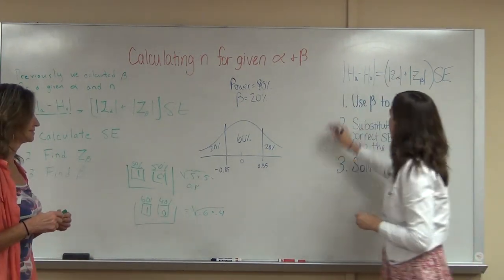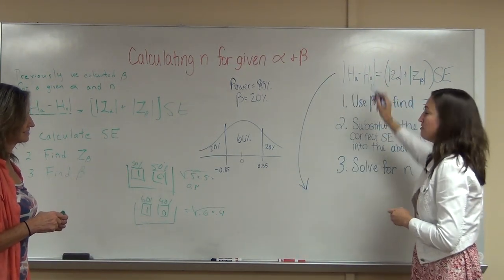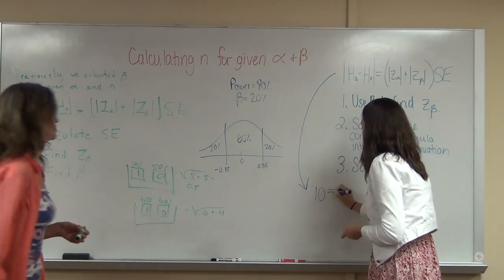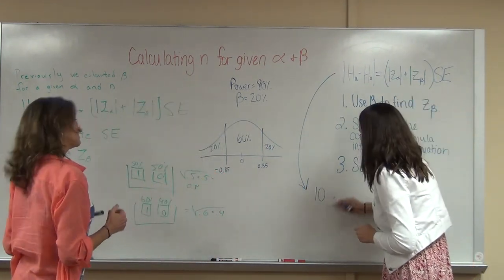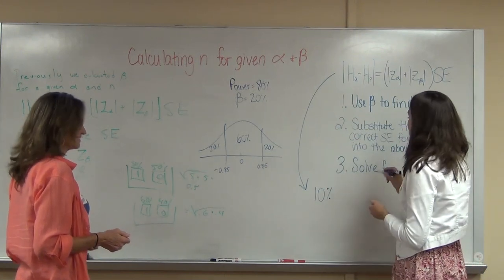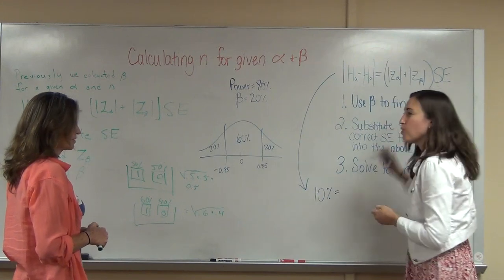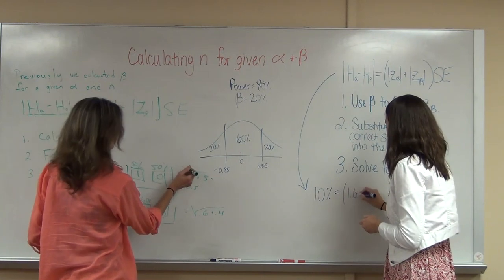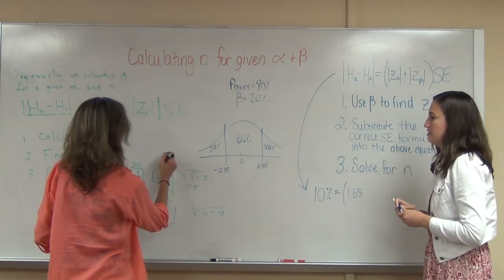Let's see what I have in the equation. Our SD, we're going to use 0.5, so I'm going to rewrite this. This distance, the alternative minus the null, we said is 10—that's just the 60 minus 50. You could put a percent to remember that we are dealing with percents. I know Z-alpha is 1.65. Let's draw the curve to show them.